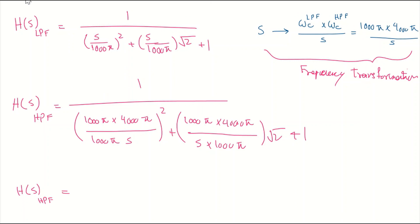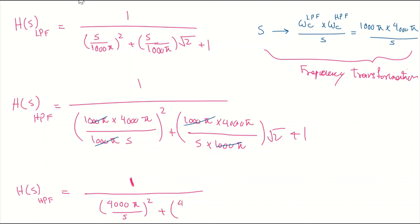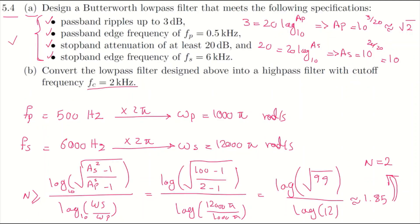After substitution and simplification, the 1000π terms cancel, and we get the high-pass transfer function: H(s) = 1 over [(4000π/s)² + (4000π/s)·sqrt(2) + 1]. This is the transfer function for the high-pass filter corresponding to our low-pass design with the given specifications.